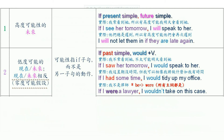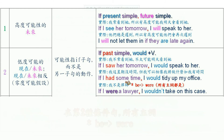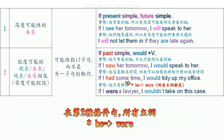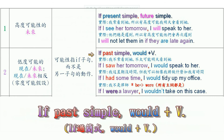Or a completely unreal or hypothetical situation — for example: 'I'm not a lawyer. If I were a lawyer, I wouldn't take on this case.' Note that the correct form of the verb 'to be' in the second conditional is 'were' for all pronouns. In the second conditional, we use the past simple in the if clause and 'would do' in the consequence clause.